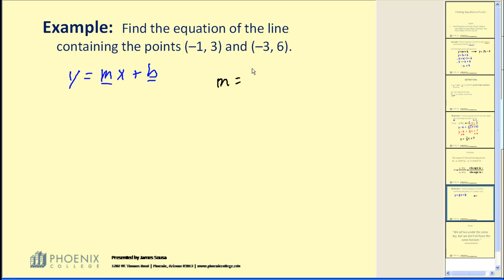Slope would be equal to y₂ - y₁. I'll call these the ones and these the twos. So y₂ - y₁ would be 6 - 3. x₂ - x₁ would be -3 - (-1). Simplifying here, we have a positive 3 in the numerator and a -2 in the denominator. So our slope would be -3/2.